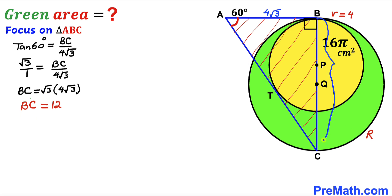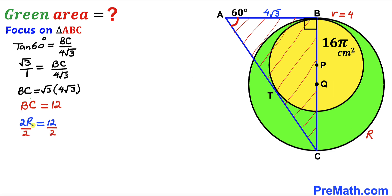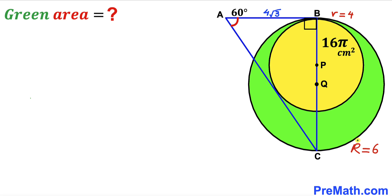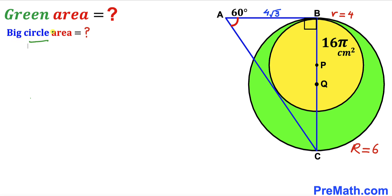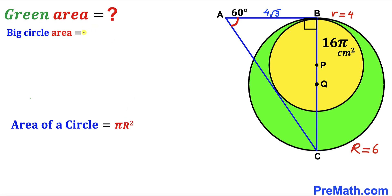We can observe that BC is the diameter of the larger circle, so the diameter equals 2R = 12. Dividing both sides by 2, the radius R = 6 centimeters. Using the area formula, the area of the big circle = πR² = π × 6² = 36π.